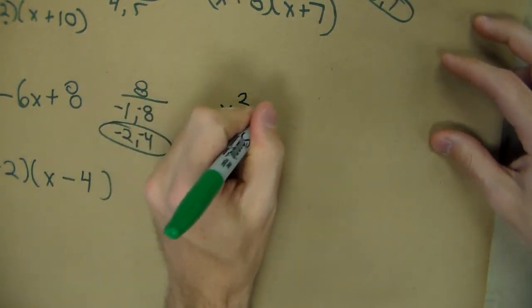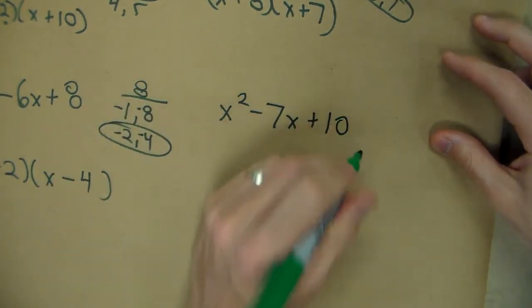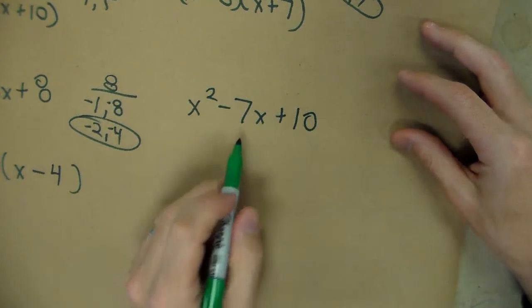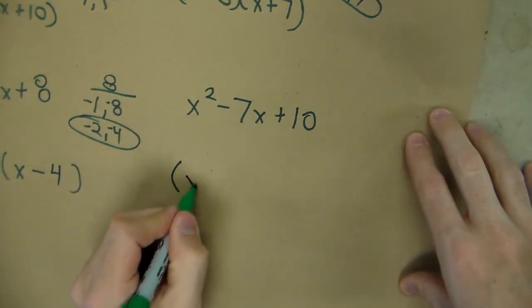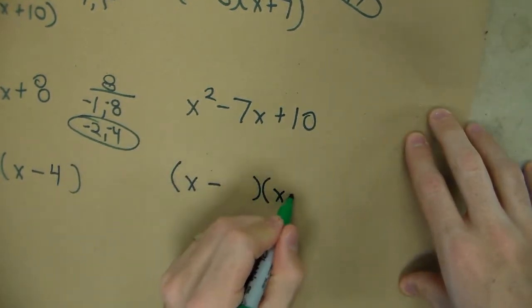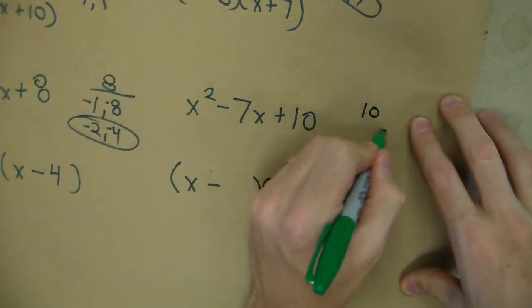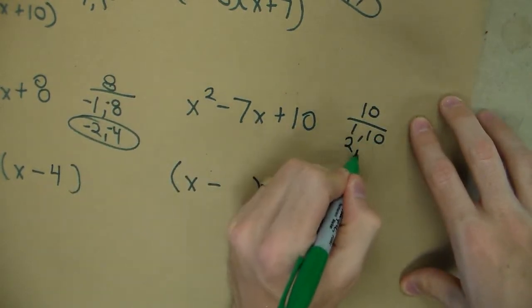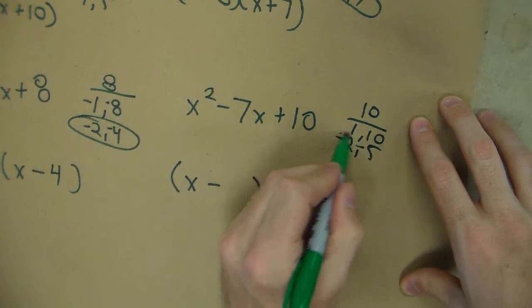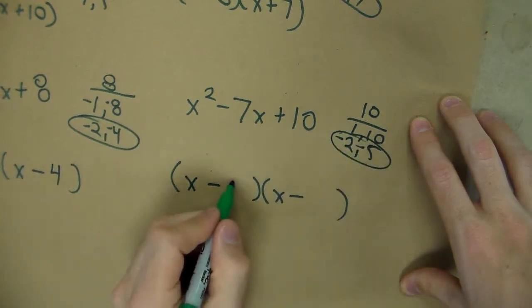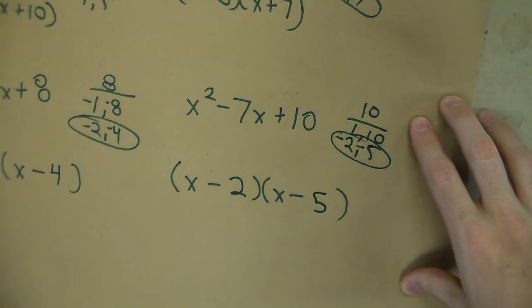If we looked at x² - 7x + 10, same thing again. They add to a negative, multiply to a positive, so they both have to be negative. The ways I can get 10 other than 1 and 10 is 2 and 5. If they're both negative that adds to negative 7: (x-2)(x-5).